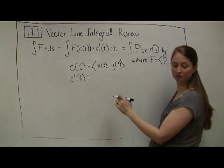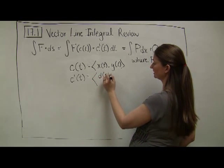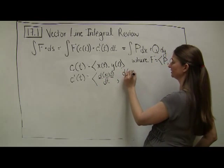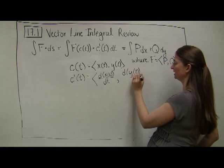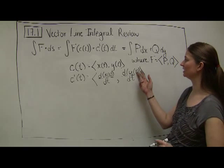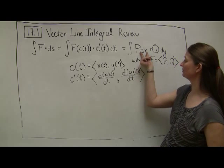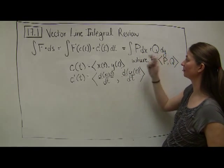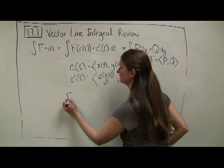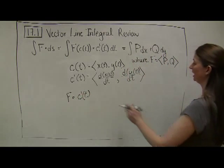What is c'(t)? It's the derivative of the first component with respect to t, which is the derivative of x(t)/dt, and the derivative of the y component, y(t)/dt. If I omit the t notation, I see that this is where my dx is coming from and this is where my dy is coming from.